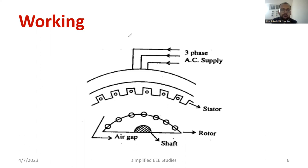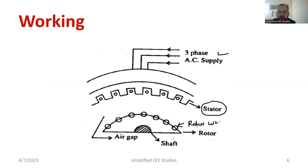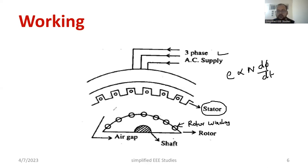Now let me explain how you are supposed to write in the examination. Please draw this particular diagram. We have the three-phase supply, then the stator with the stator winding. Inside is the rotor with rotor winding. We provide rotor winding because E is proportional to N into dφ/dt — as the number of turns increases, the EMF produced at the rotor also increases. Inside the rotor we can see the shaft, and there is an air gap where the flux is going to interact.